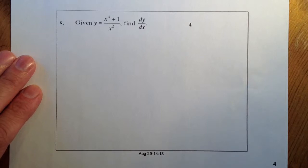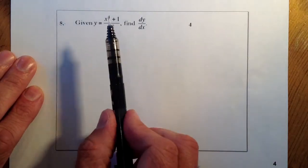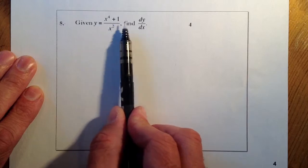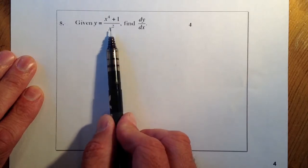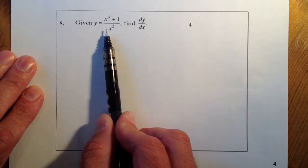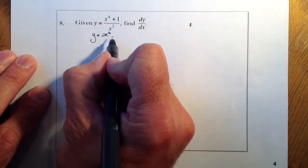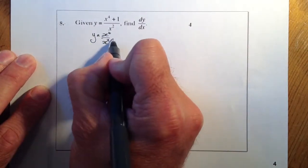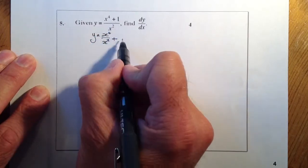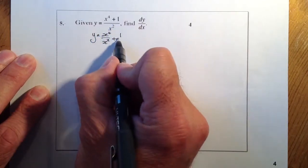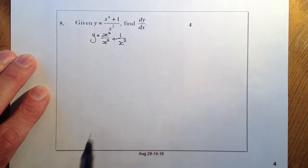Right, so what I'm going to do first is split this fraction. I'll have x squared as the denominator on each side. So my first line is going to be x to the power of 4 all over x squared, plus that plus sign there, and then the 1 all over x squared.